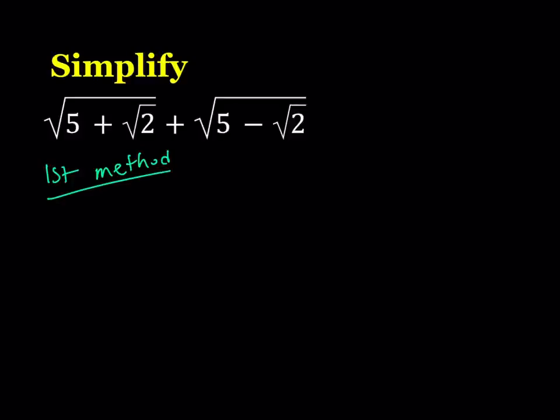The first method involves my favorite method, substitution. So, let's go ahead and do the following. We're going to be calling the first radical, which is the square root of 5 plus root 2, a.